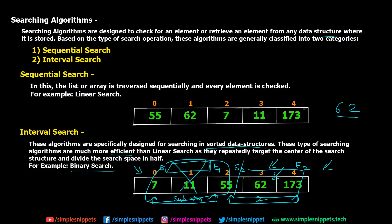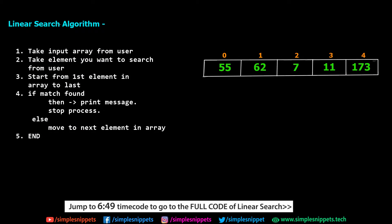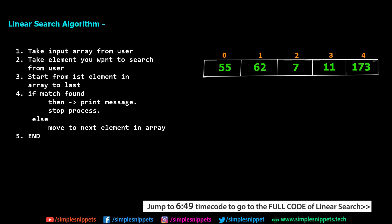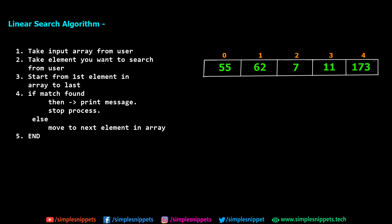Right now let's focus on sequential search and look in detail at linear search. In linear search, we take the input array — we'll apply it on an array data structure for simplicity, but linear search can also work on linked list, queue, or stack, wherever there is a sequential way of storing data. Step one: take input array from user. Step two: take the element you want to search. Step three: start from the first element to the last. Step four: if match found, print the message and stop; else move to the next element. We will convert this algorithm into C++ and implement it.